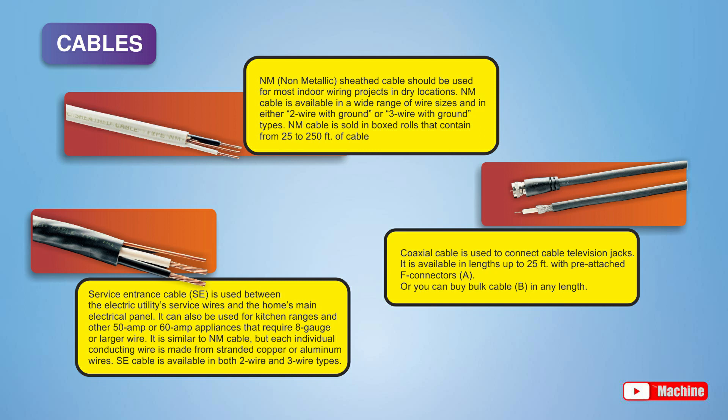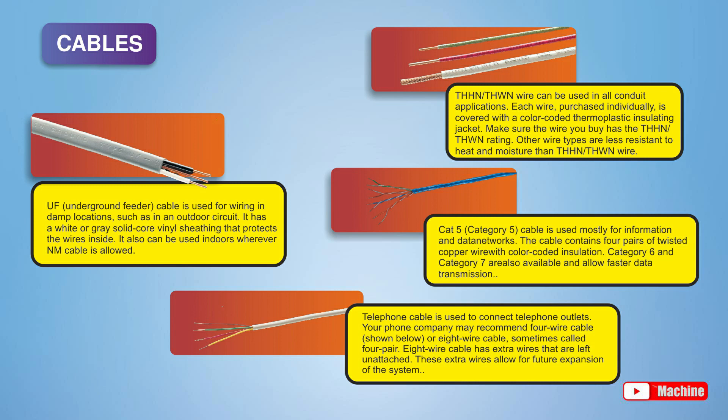Here are some cables usually used at your home. Coaxial cable for television antenna. NM, or non-metallic sheathed, used for most indoor wiring projects in dry locations. Service entrance cable is used between the electric utility's service wires and the home's main electrical panel. THHN or THWN, a thermoplastic high heat resistant nylon coated wire, used in all conduit applications. CAT5, or Category 5 cable, is used mostly for information and data networks. UF cable is used for wiring in damp locations, such as in an outdoor circuit.